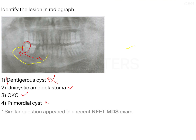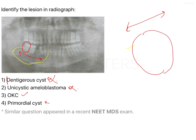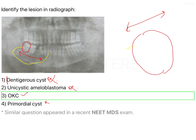Primordial cyst occurs more commonly in the premolar region but does not extend to the molar region, so that is out. That brings us to unicystic ameloblastoma and OKC. Unicystic ameloblastoma does not have an antero-posterior spread; rather, it causes expansion of the buccal and lingual cortical plates and is more circumscribed. So unicystic ameloblastoma can also be eliminated, and therefore the answer is OKC.